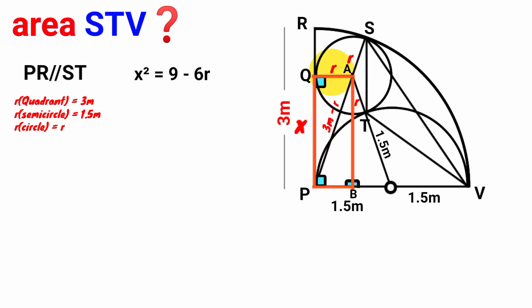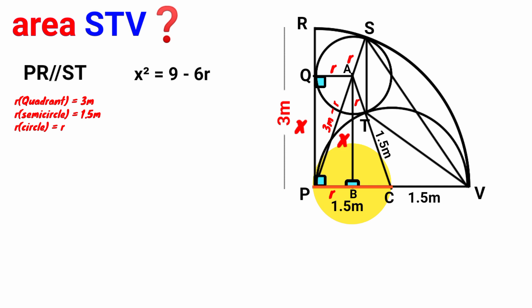Since this side is r, this opposite side must also be r, and since this side is x, this opposite side must also be x. Looking at this line segment — call this point C — its length is 1.5 meters. With this part being r, the remaining part must be 1.5 minus r. We then look at triangle ABC.